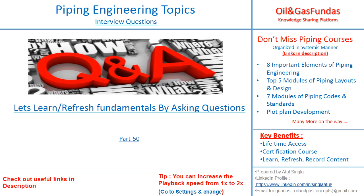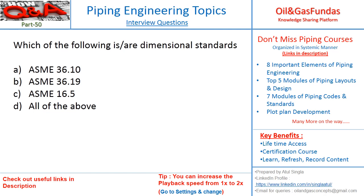Let's start with the first question: which of the following is the dimensional standard? ASME 36.10, ASME 36.19, ASME 16.5, or all of the above? The correct answer is A and B. ASME 36.10 and 36.19 are dimensional standards for pipes.